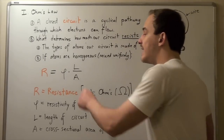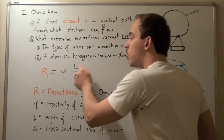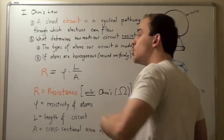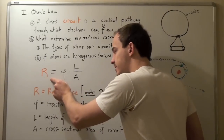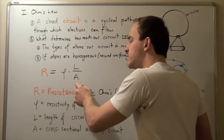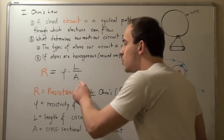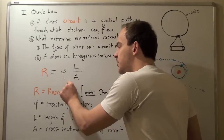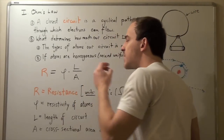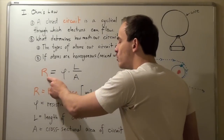Now let's look at length. We see that resistance R and length L are directly proportional — if you increase L, you will increase resistance. Now let's look at cross-sectional area A. Resistance and cross-sectional area are inversely proportional. That means if you increase the cross-sectional area, you will decrease resistance, and if you decrease the cross-sectional area, you will increase resistance.